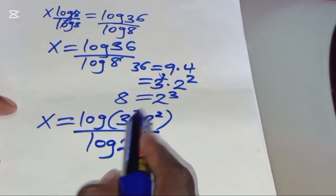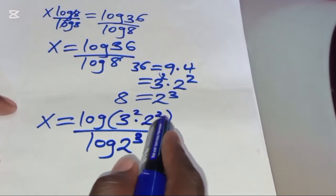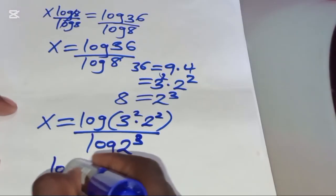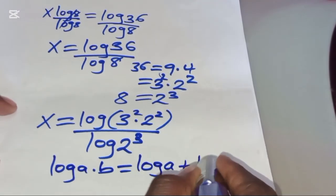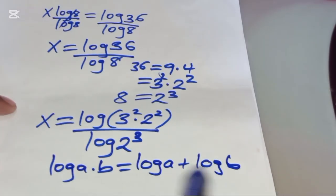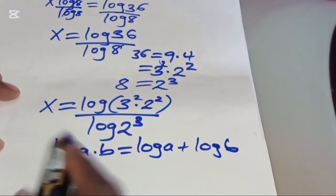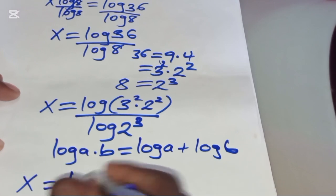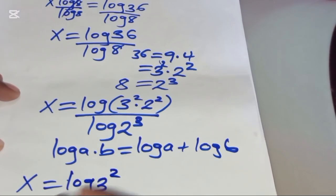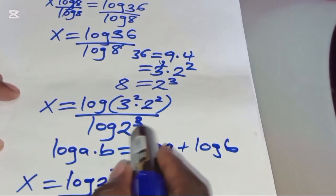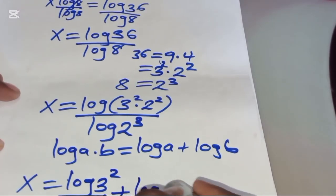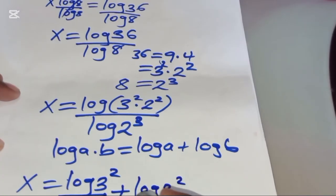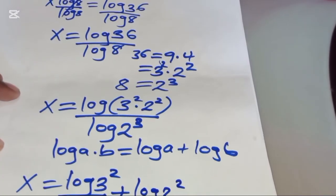Now as you can see, log of 3 to the power 2 times 2 to the power 2 is in the form of log(A × B), which we can express as log A plus log B. Applying this logarithm identity, we'll have x equal to log of 3 to the power 2 divided by log of 2 to the power 3, plus log of 2 to the power 2 divided by log of 2 to the power 3.